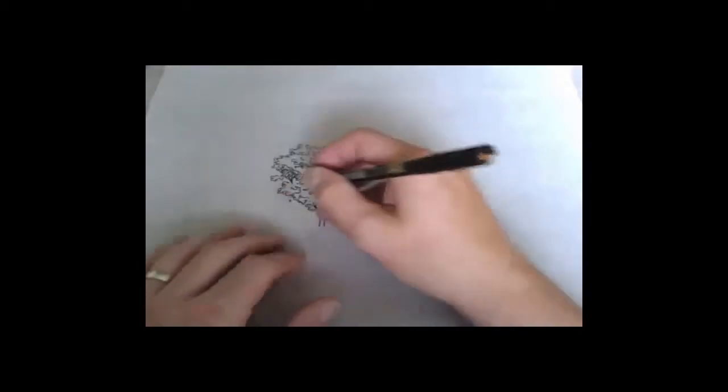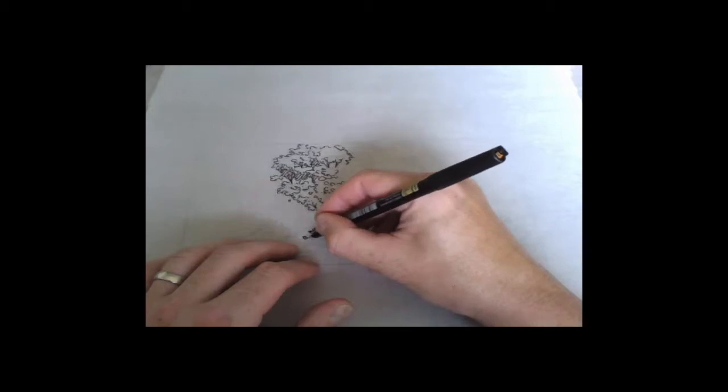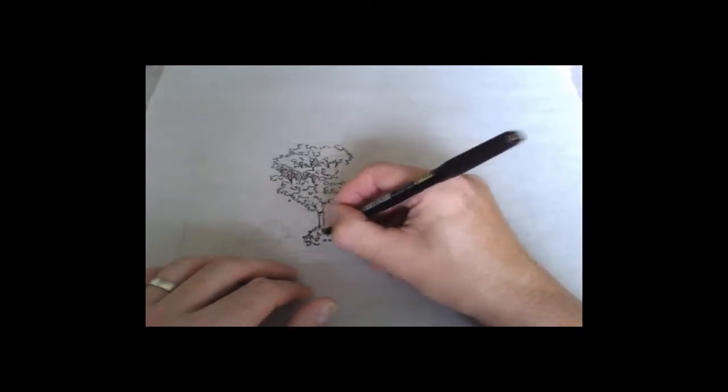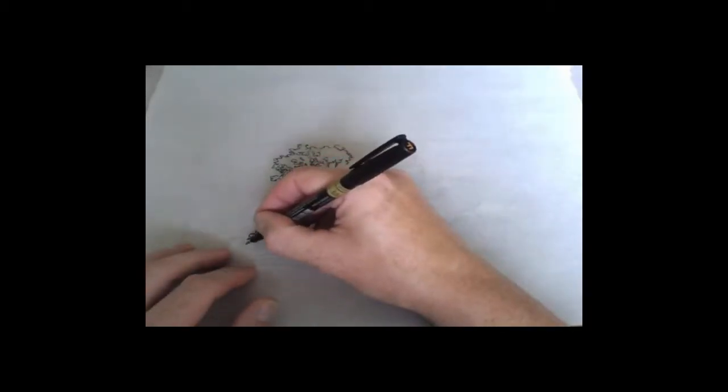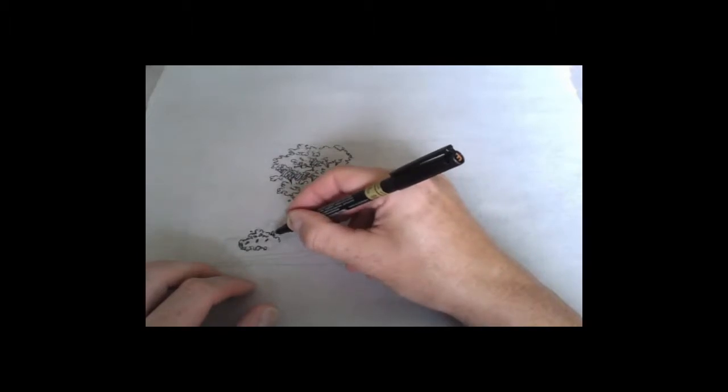Typically I'm working with three line weights. I'll work with a medium, then add a heavier line weight, and then add my fine line weight at the end. I'm just trying to establish most of the detail at this point.